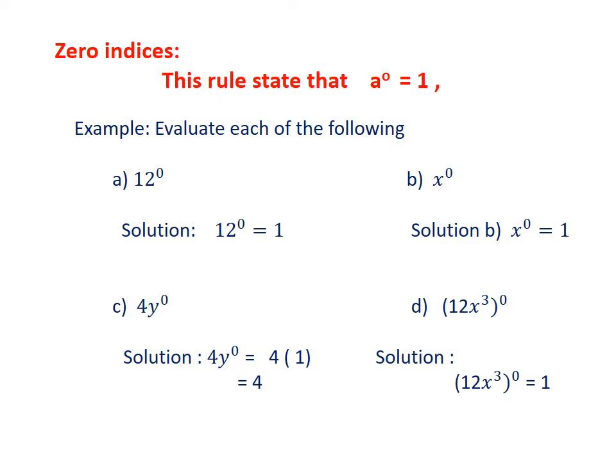Zero Indices: This rule states that a^0 = 1. It means whenever we have some number or variable with whole power 0, we get answer 1. For example, evaluate each of the following: